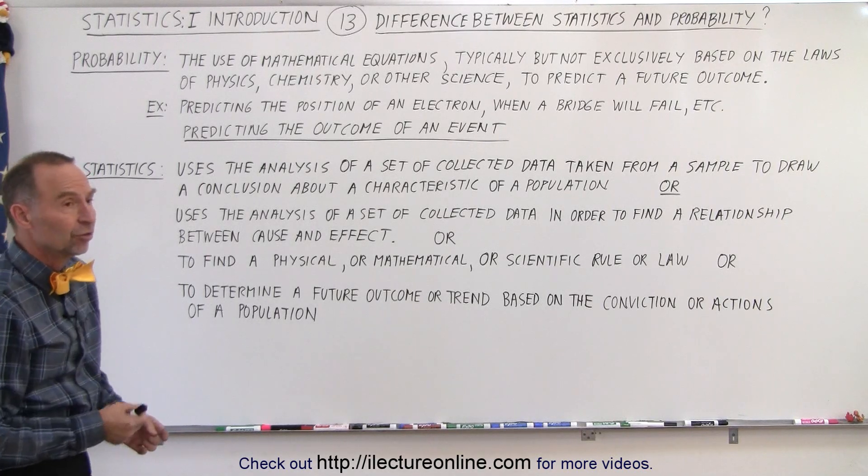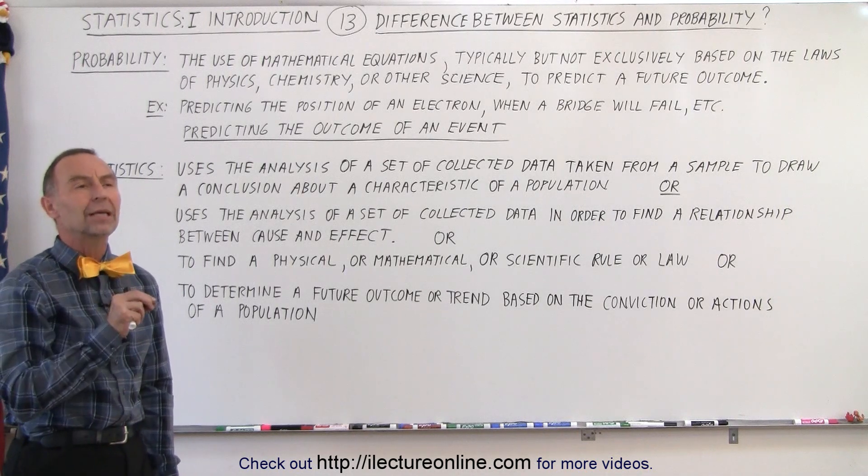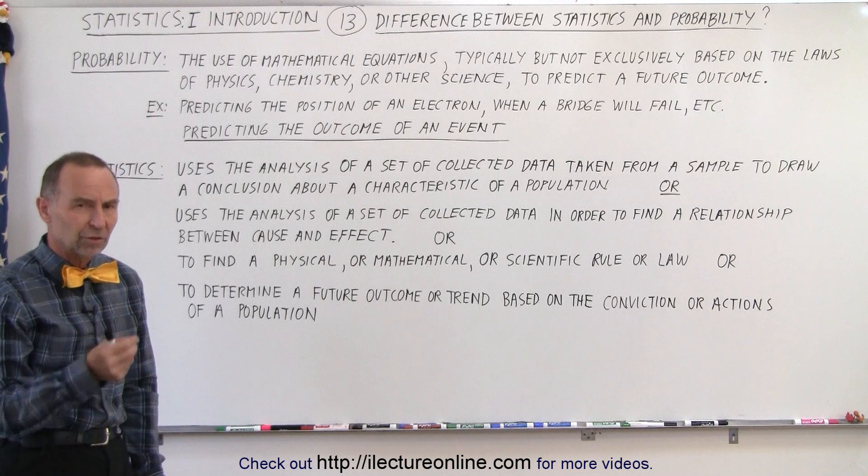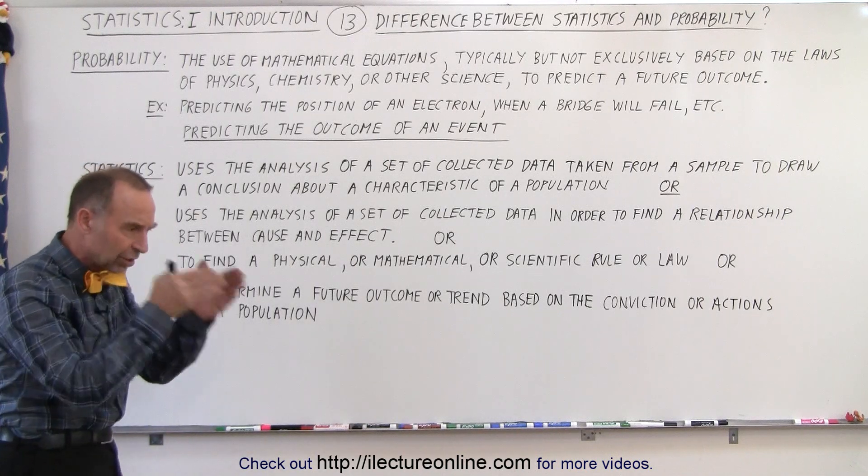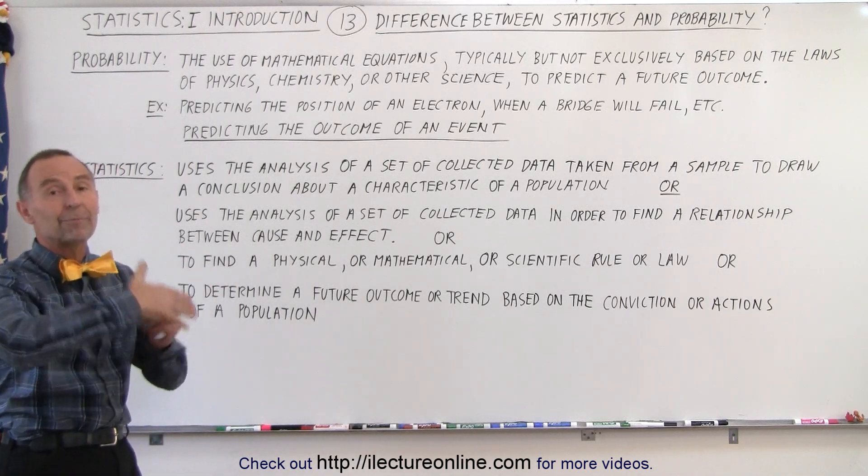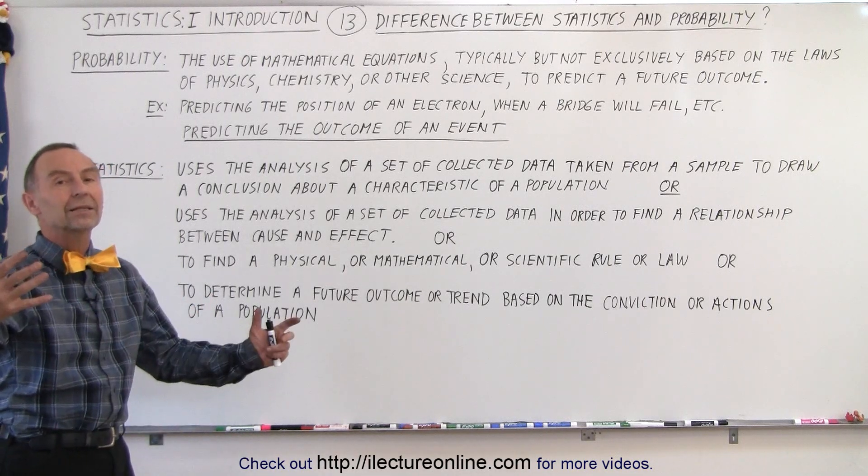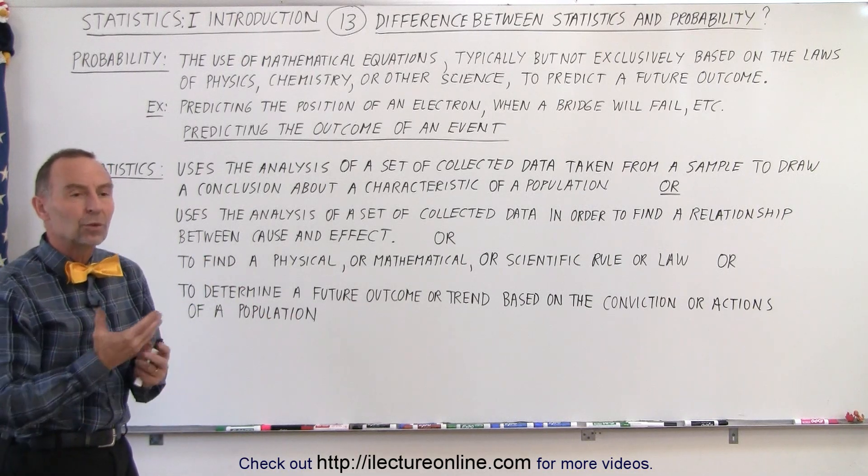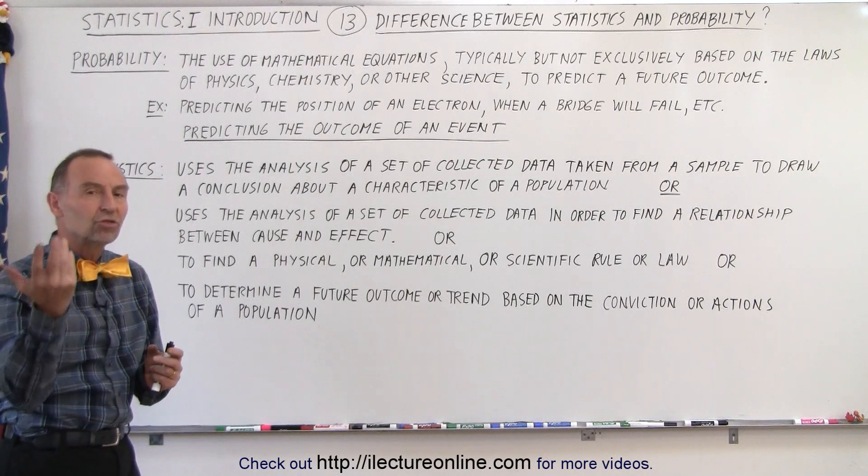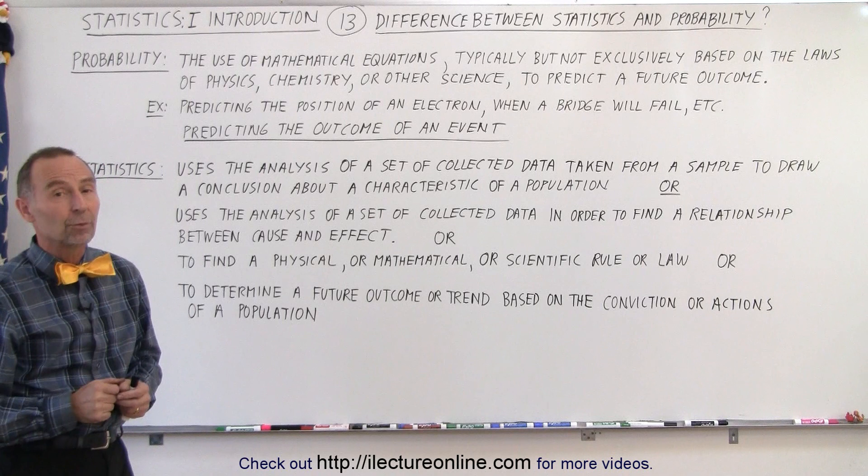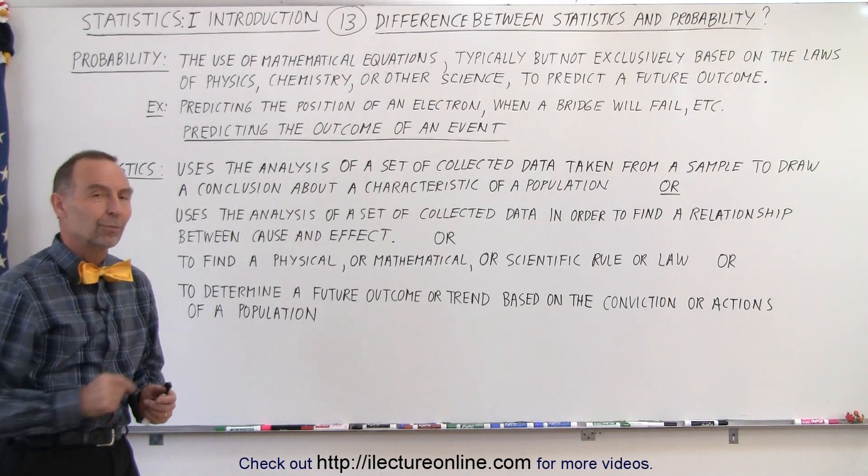So that's the big difference. Usually probability is based on equations, mathematical laws of physics, chemistry, or some other science. And there's a particular probability of a single event based upon those equations, versus we collect a whole set of data, we analyze the data, we try to predict relationships, trends and so forth to make conclusions. And that's the big difference between statistics versus probability.